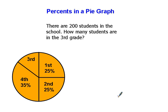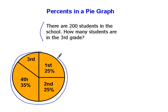Super hard problems for kids. All right, here we go. We've got a pie graph right here, and we have words that explain the pie graph right here. Make sure you read that problem carefully. There are 200 students in the school, which means that this represents 200 total kids.